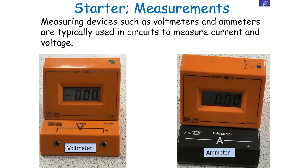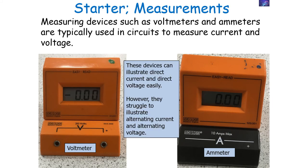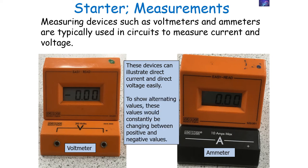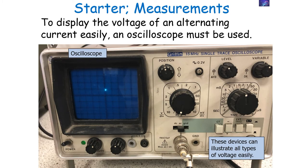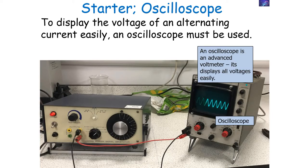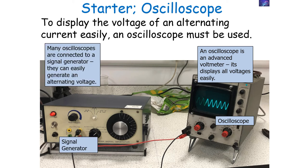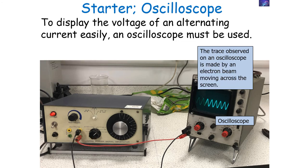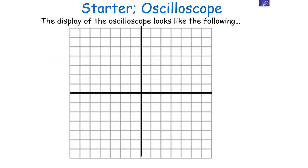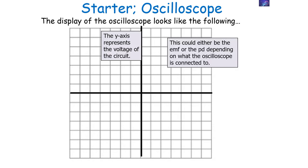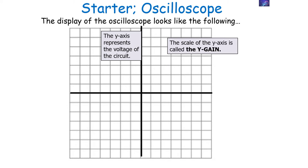Measuring devices such as voltmeters and ammeters tend to measure direct current and voltage. To examine alternating current and voltage, we use an oscilloscope, which is like an advanced voltmeter that can display both direct and alternating voltages. We connect oscilloscopes to a signal generator to generate alternating voltage. The trace is made by an electron beam moving across the screen. The y-axis represents voltage (EMF or PD), and the scale is called the y-gain — for example, if the y-gain is set to two volts, every vertical square represents two volts.